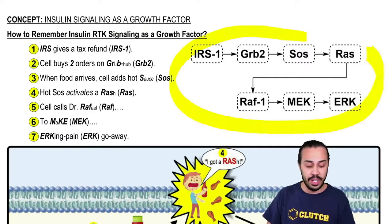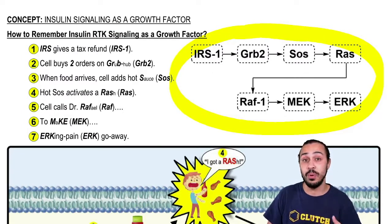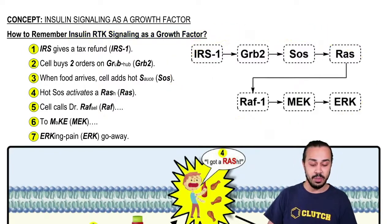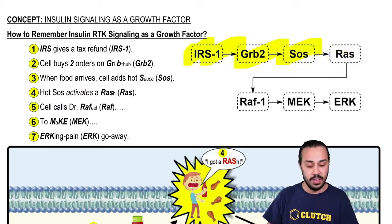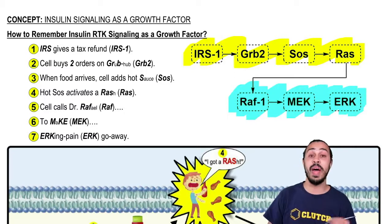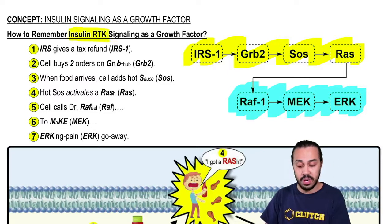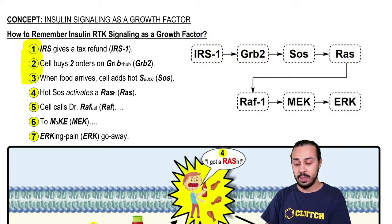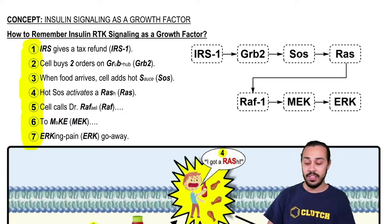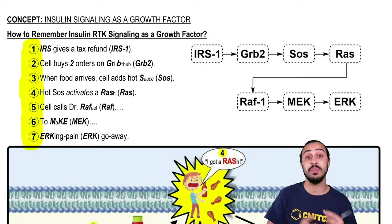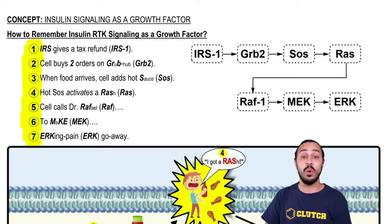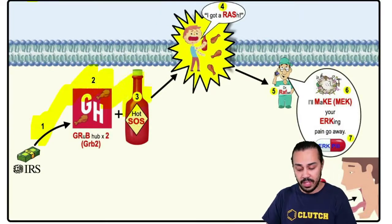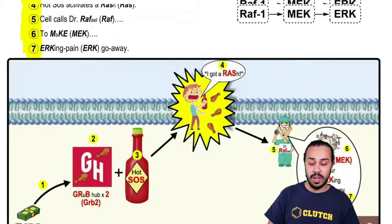On the right-hand side, we have an image showing the most important components in the correct order for insulin RTK signaling as a growth factor. The top part represents the RAS pathway, ending with RAS, and the bottom pathway represents the MAPK pathway. Both the RAS and MAPK pathways are involved in insulin RTK signaling as a growth factor. On the left-hand side, we have 7 steps to this story, which correspond with the 7 steps from the previous lesson videos and with the 7 numbers in the image.